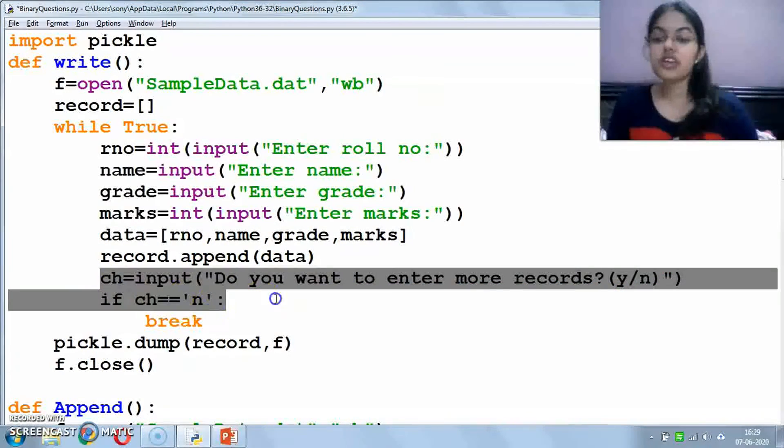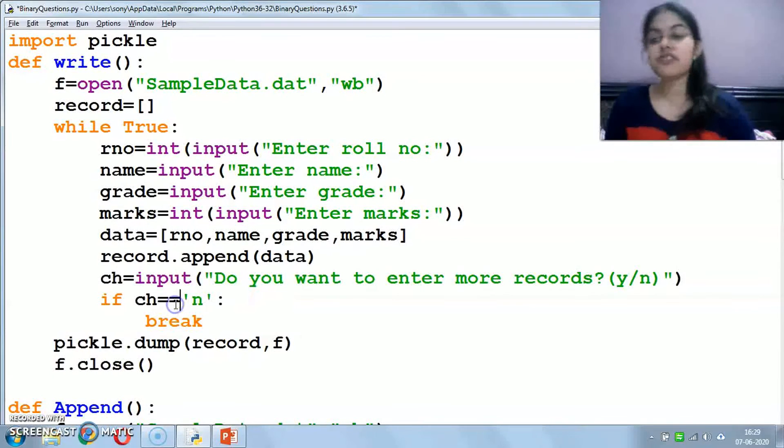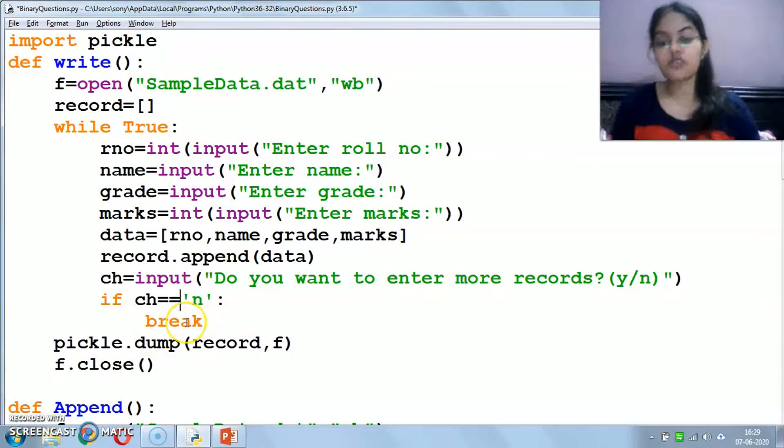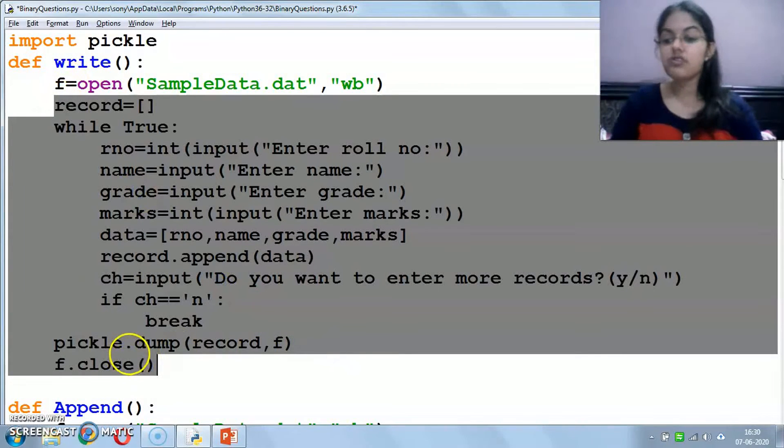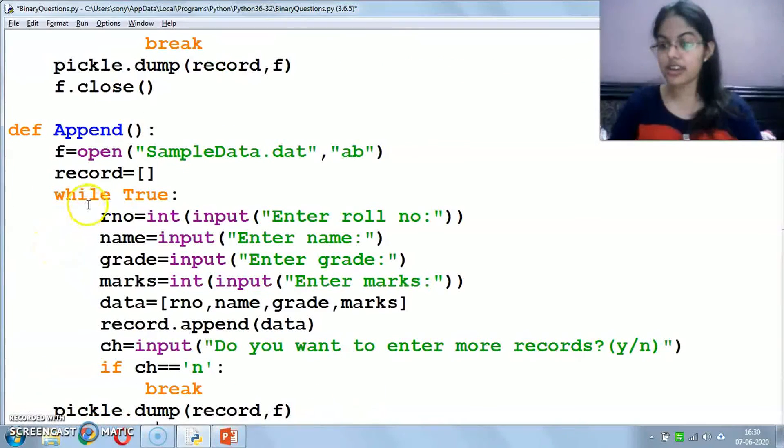After that, we will ask the user to enter more records. If they press Y, the loop will continue. If not, then as soon as all data is entered, what do I have to do? Dump. We will dump all the data in the record list.